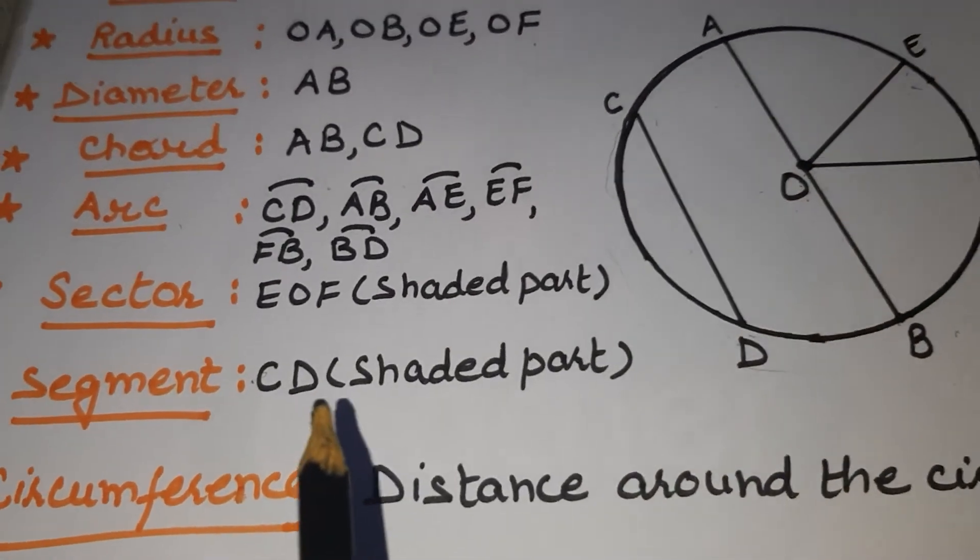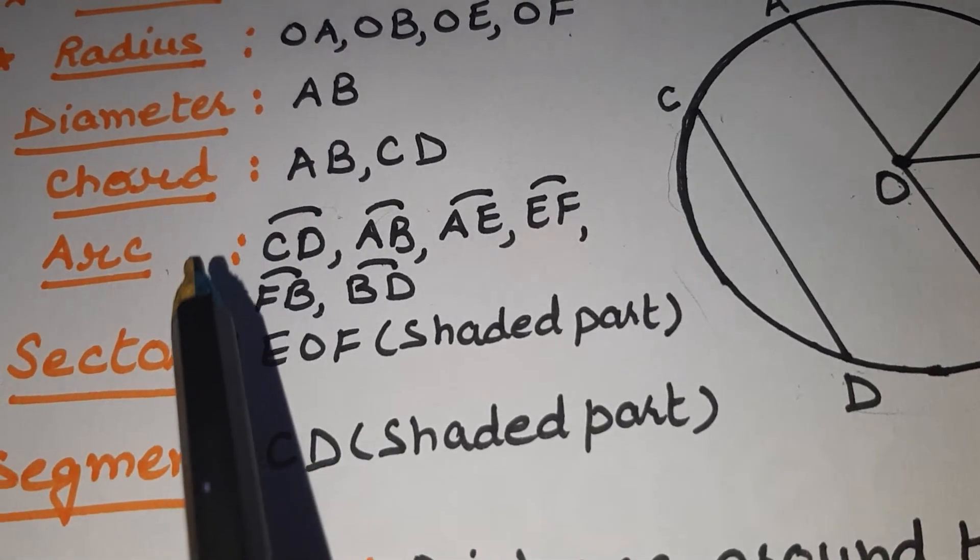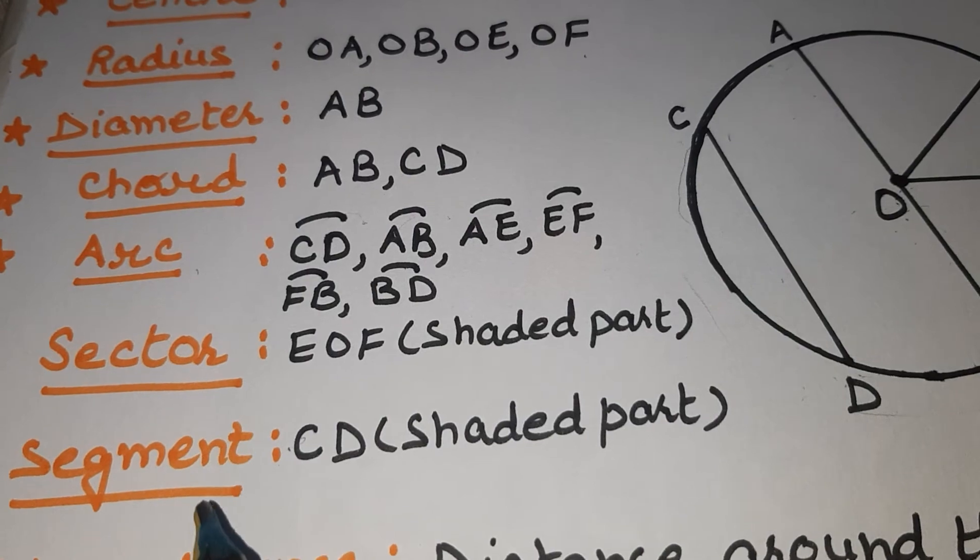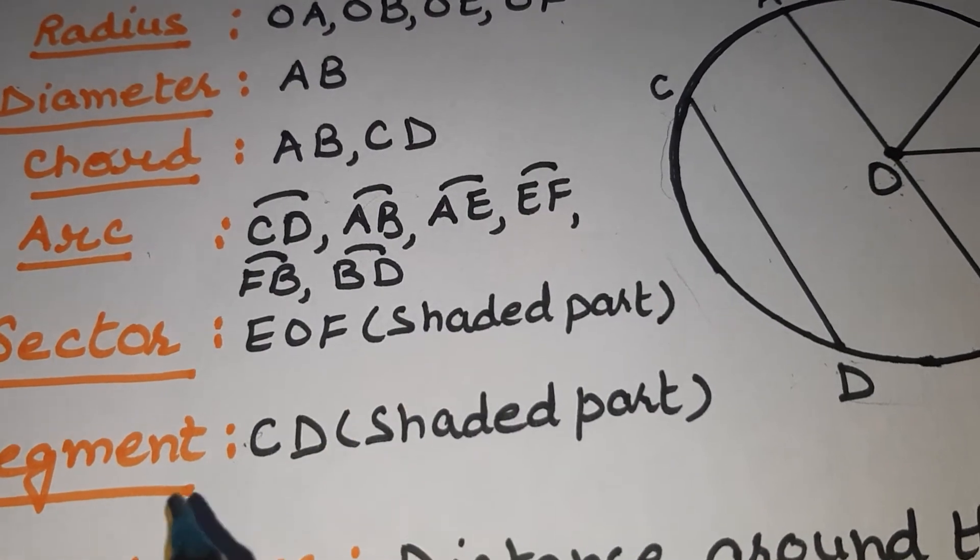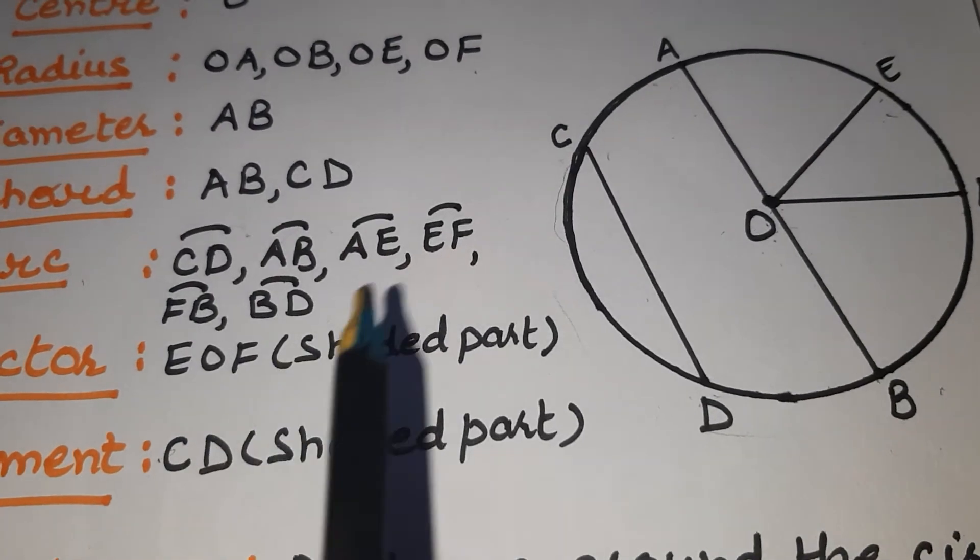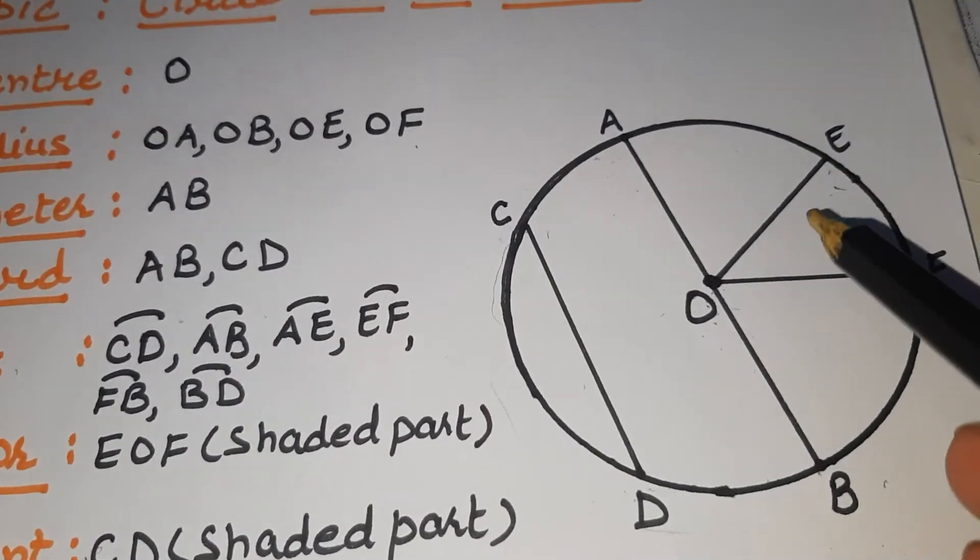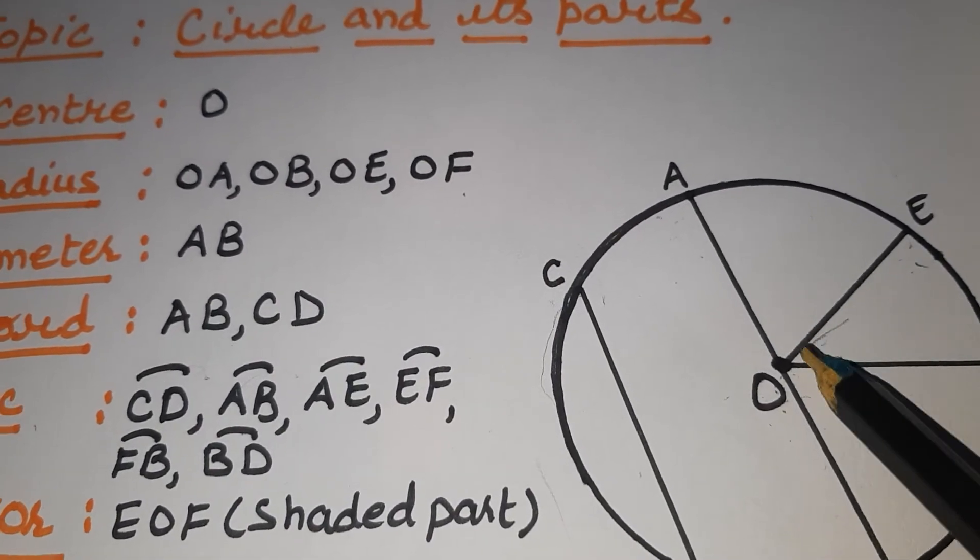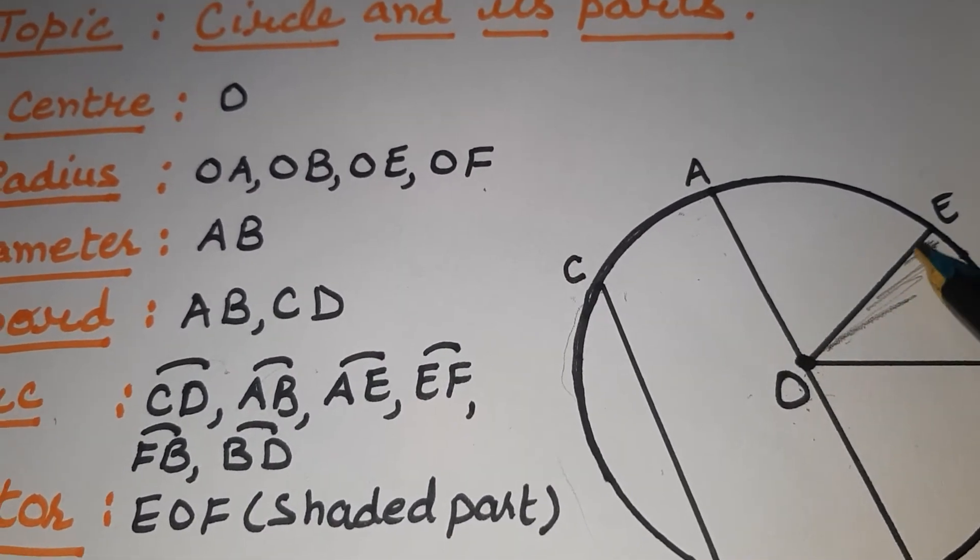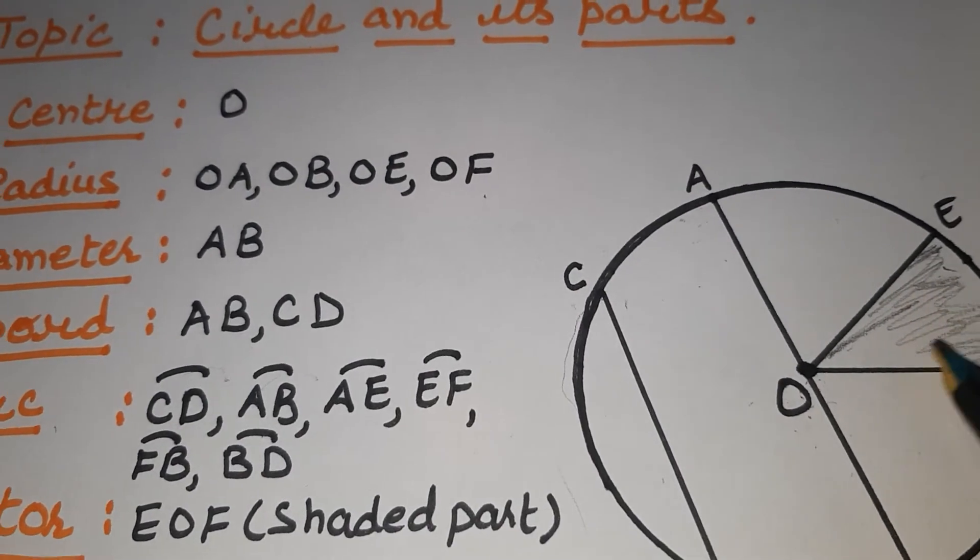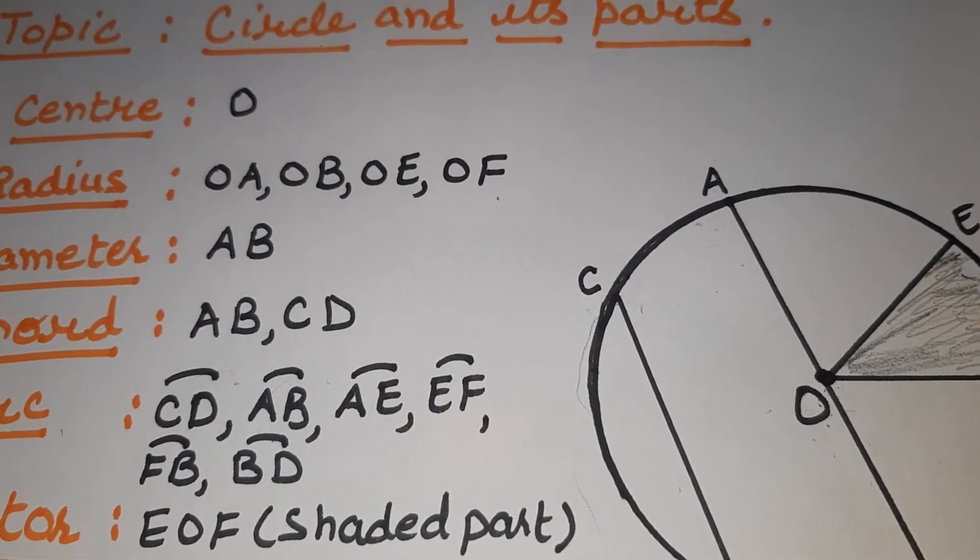Next is sector. These terms are new for you: chord, arc, sector, segment. So next is sector. Sector is EOF, this EOF shaded part. So if we shade this, this part is called sector.